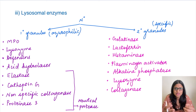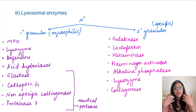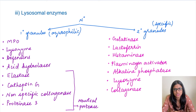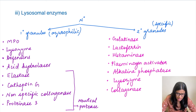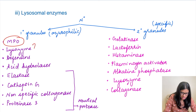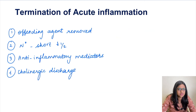The third mechanism is lysosomal enzymes inside the phagolysosome. Neutrophils have two types of lysosomal granules: primary azurophilic granules and secondary specific granules. Primary granules contain MPO, lysozyme, defensins, acid hydrolases, elastase, and other neutral proteases. Lysozyme and defensins are antimicrobials.